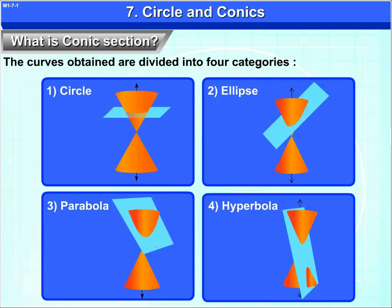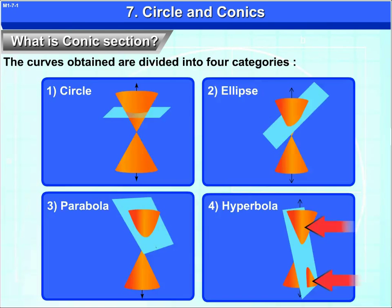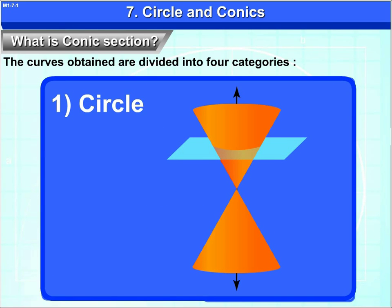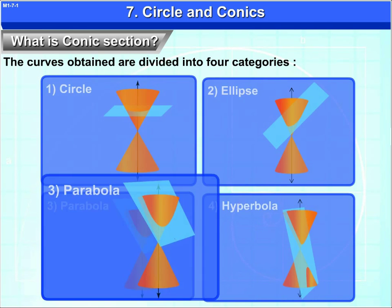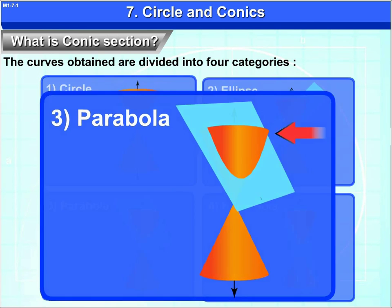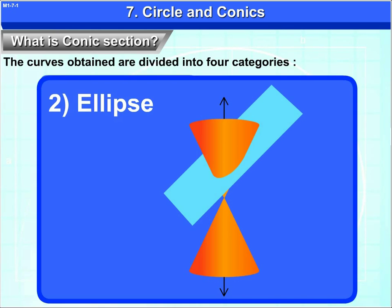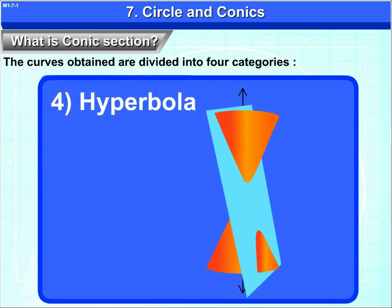In the first three, the plane intersects only one nappy of the cone, whereas in hyperbola, the cone intersects both the nappies. As we can see here, in circle it intersects only one nappy. In parabola, only one nappy. In ellipse also, only one nappy. And in hyperbola, it intersects both the nappies.